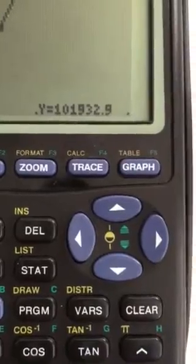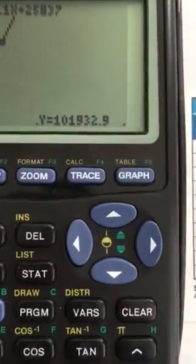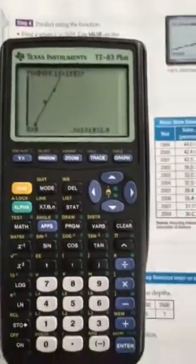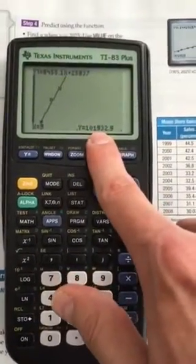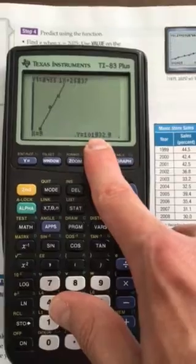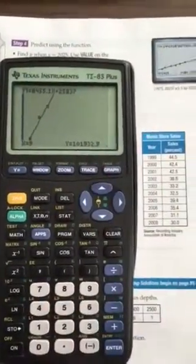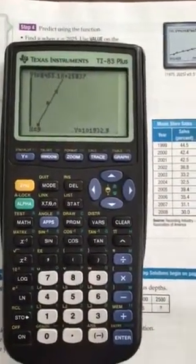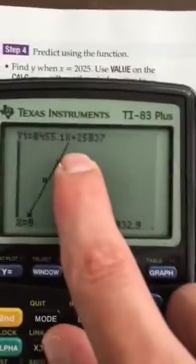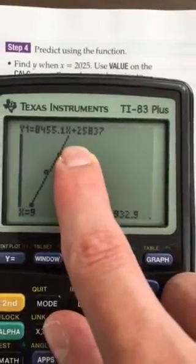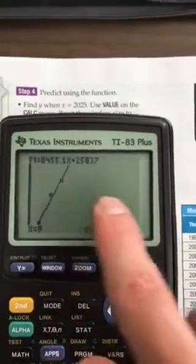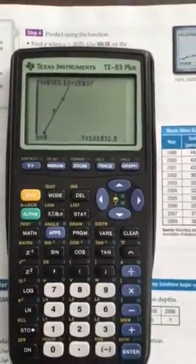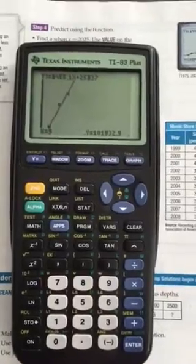So for this question, all you would need to copy down would be this value here. And you could also include your regression equation at the top here: y = 8,455.1x + 25,837. Okay, hope that makes sense.